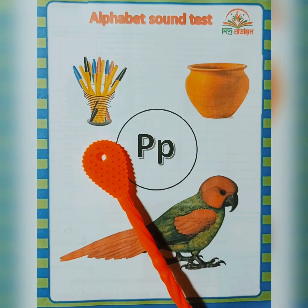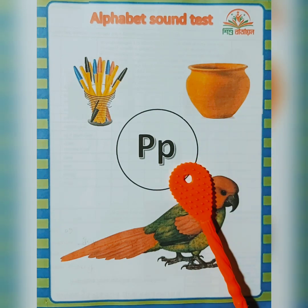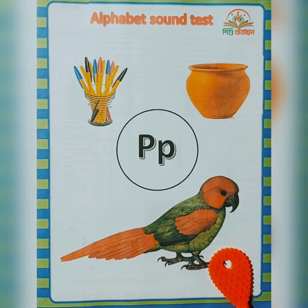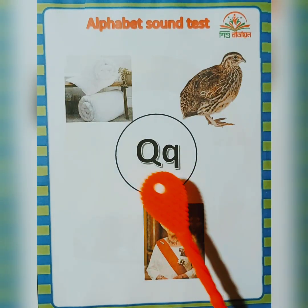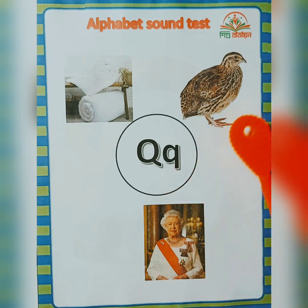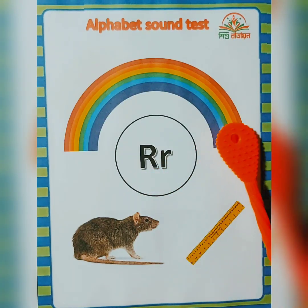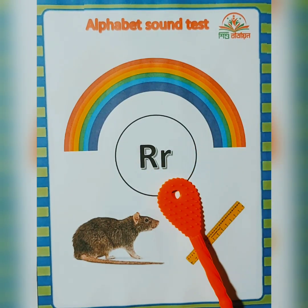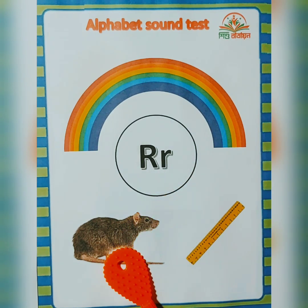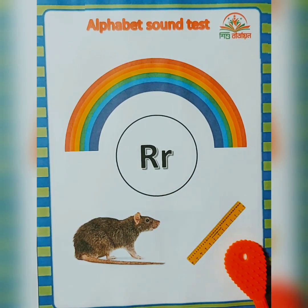P — pen, parrot. Q — quilt, queen. R — rainbow, rat, ruler.